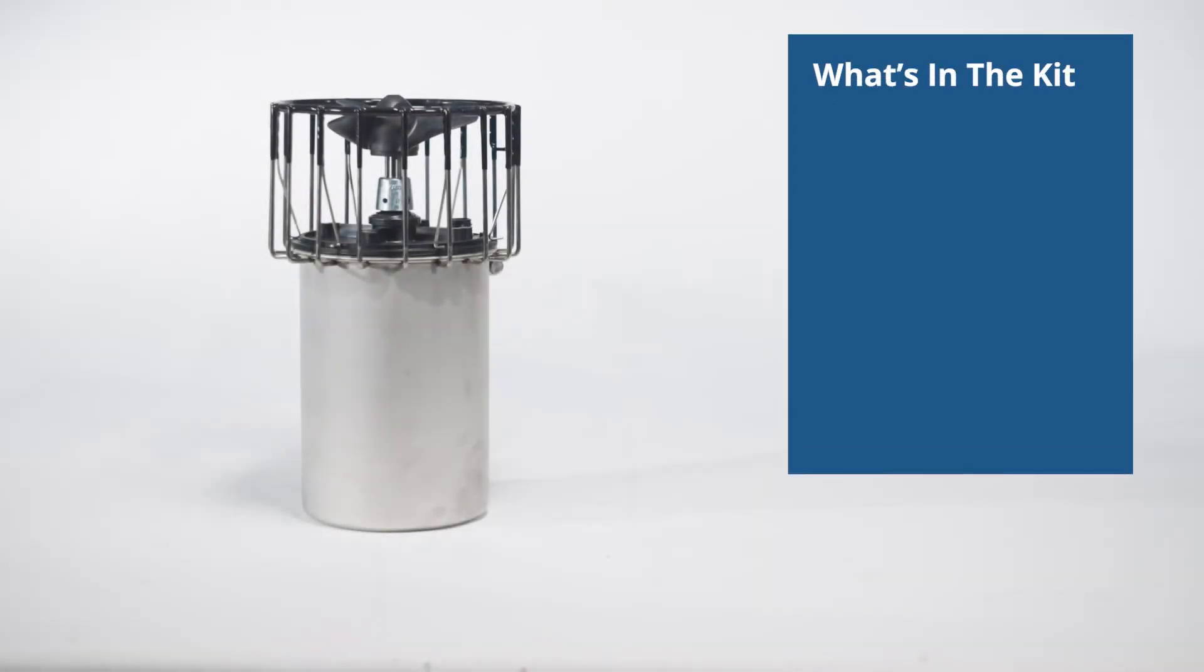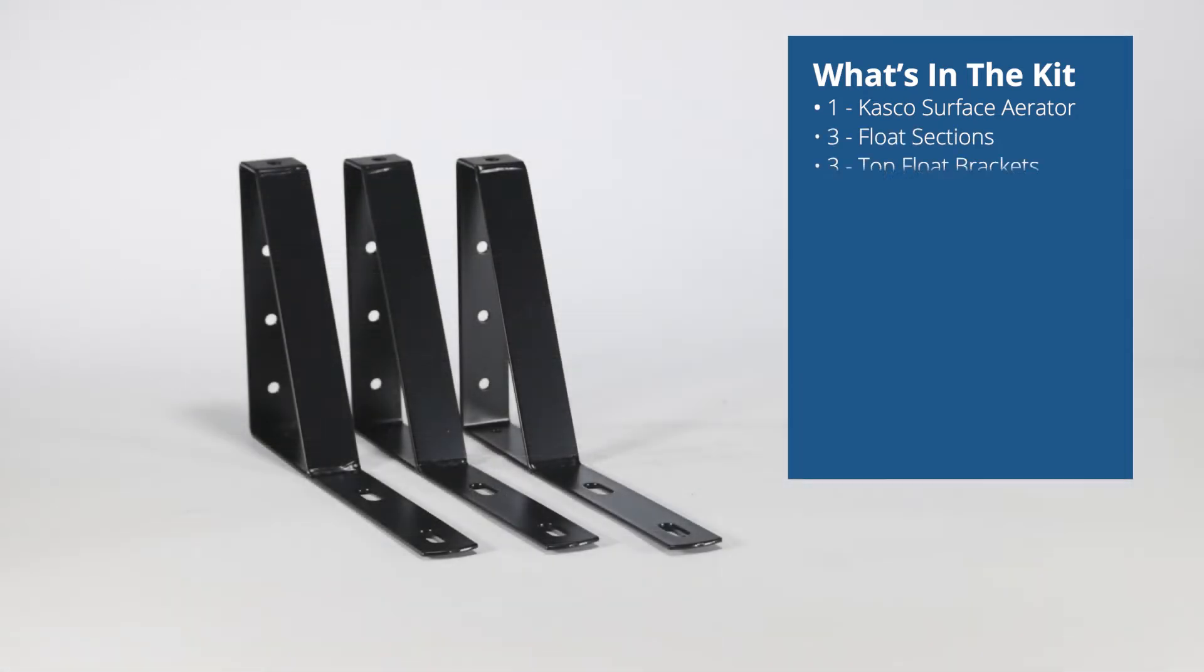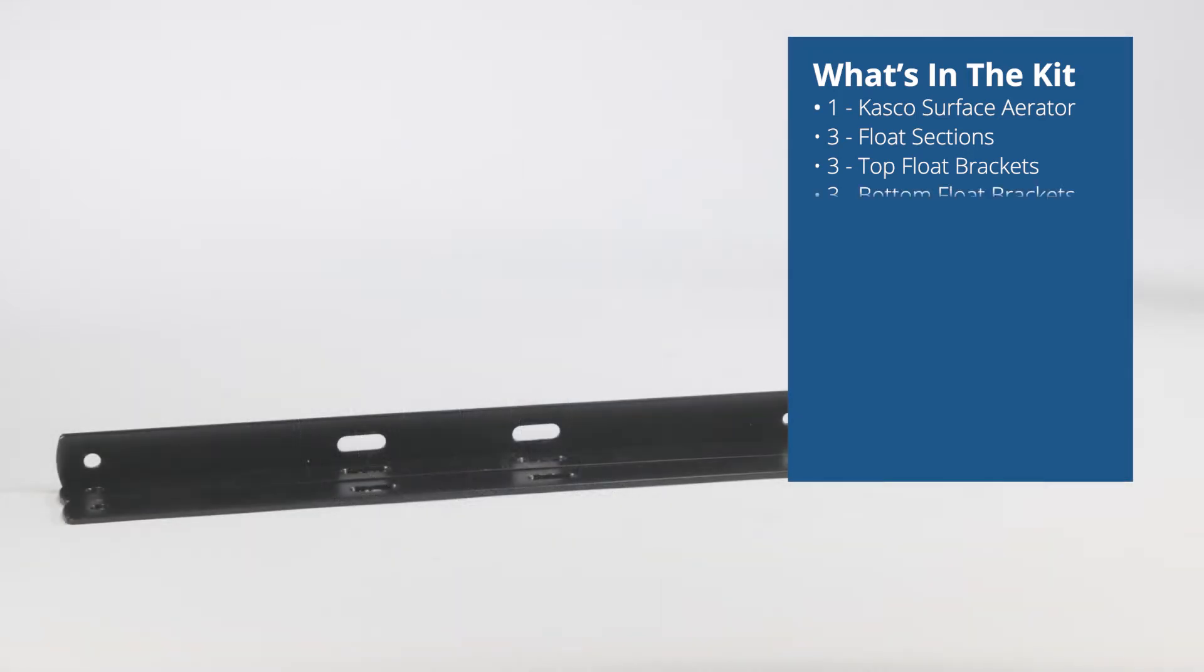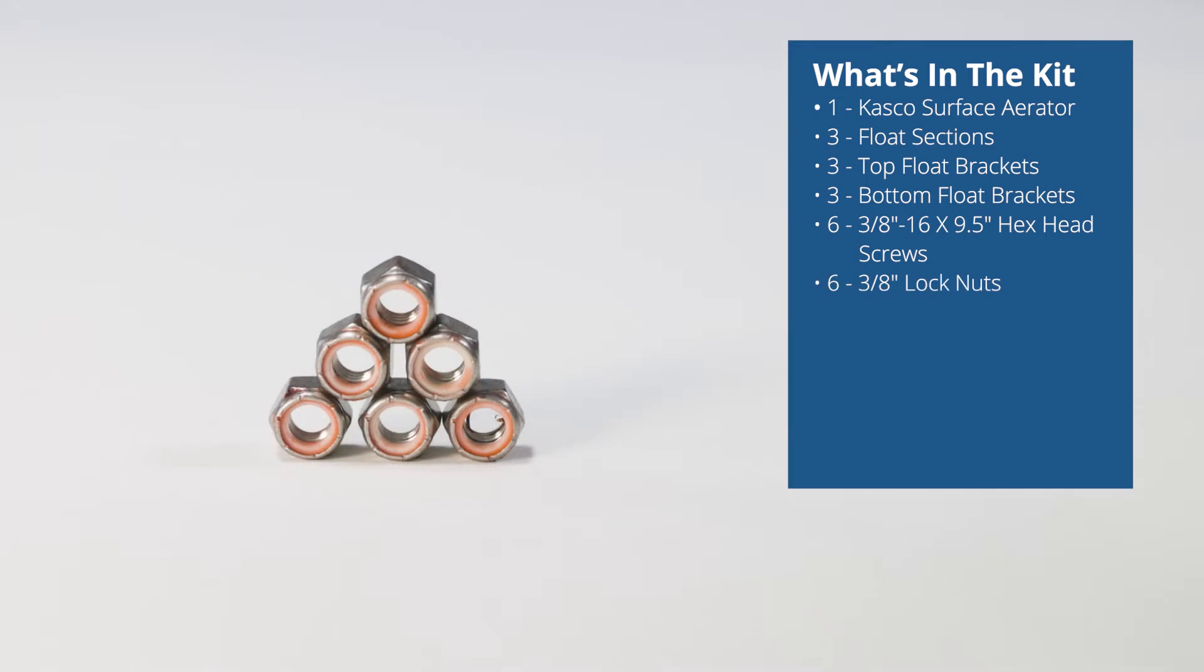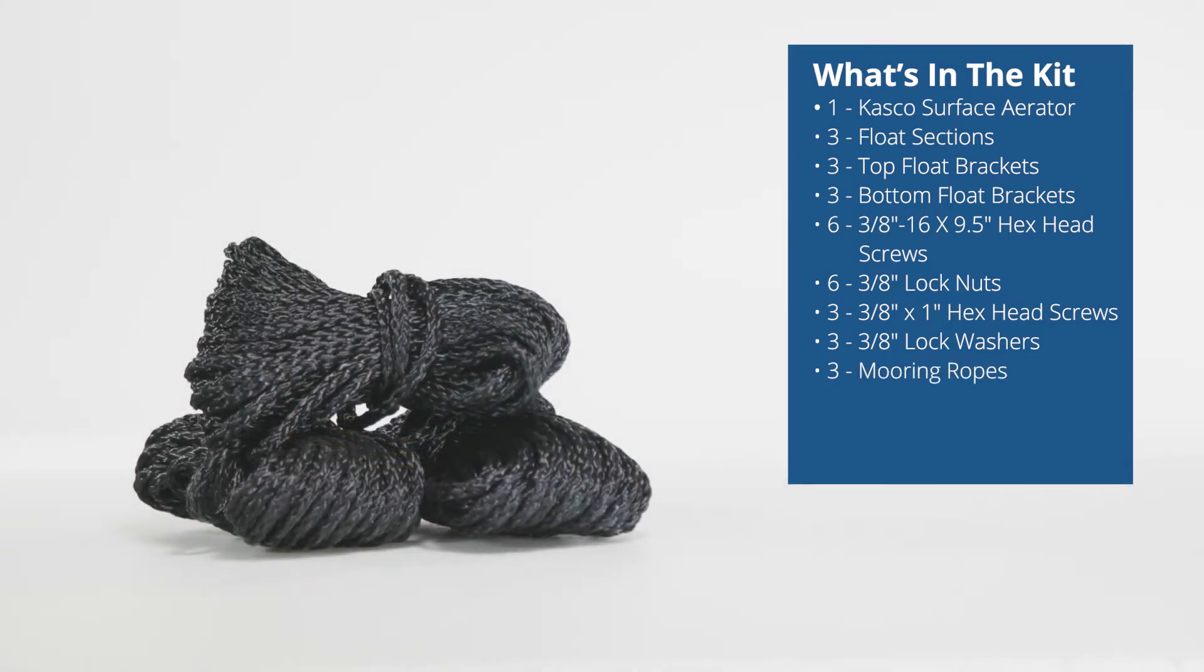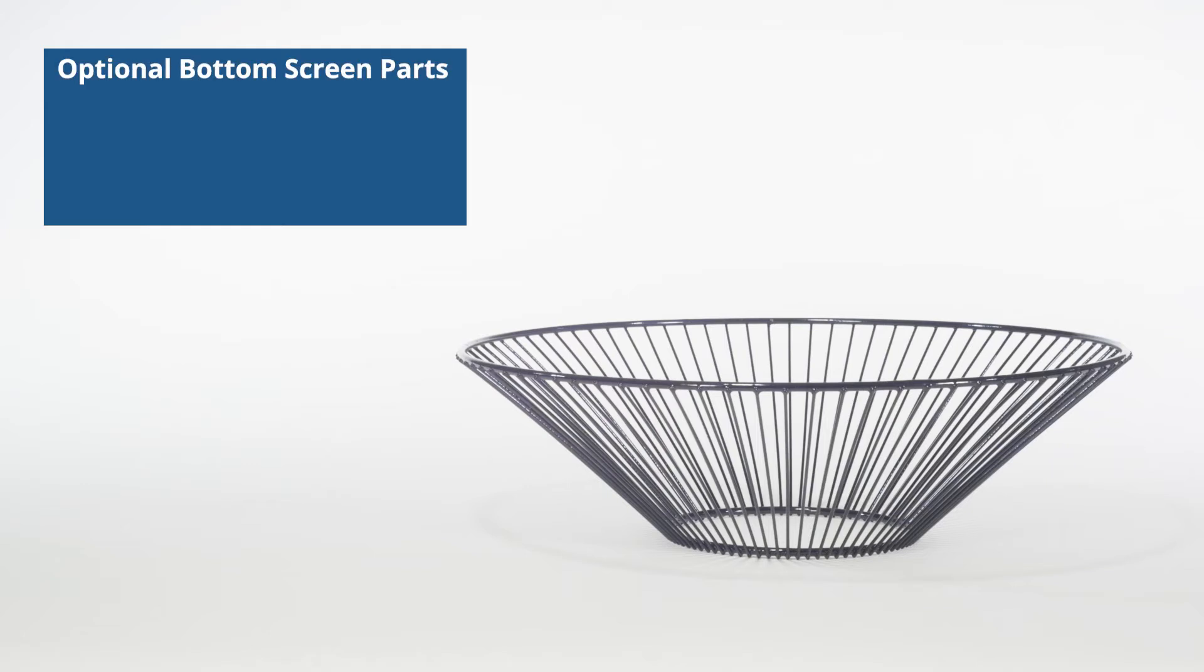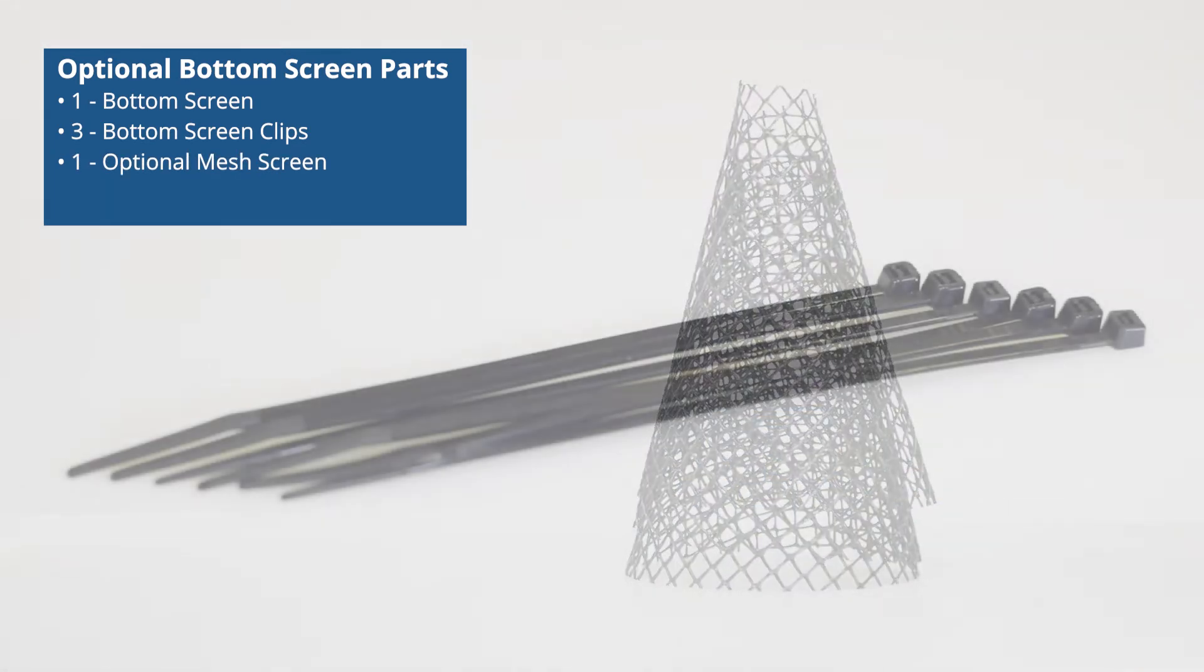What's in the kit? One surface aerator unit, three float sections, three top float brackets, three bottom float brackets, six 3/8 inch by 16 by 9.5 inch hex head screws, six 3/8 inch lock nuts, three 3/8 inch by 1 inch hex head screws, three 3/8 inch lock washers, three mooring ropes, optional bottom screen parts, one bottom screen, three bottom screen clips, one optional mesh screen, and zip ties.